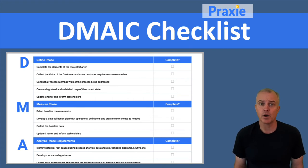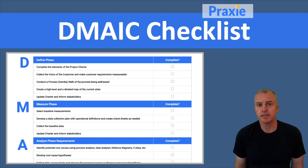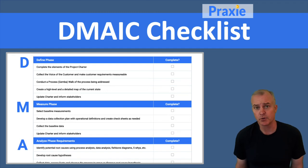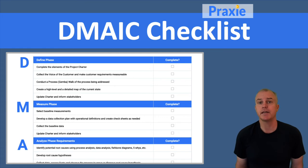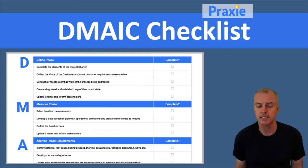DMAIC is a fundamental framework and model used in Lean Six Sigma projects. It's an acronym that stands for Define, Measure, Analyze, Improve, and Control. Each of those elements represents a number of different activities that you should be taking to move to the next element or step in the DMAIC process.